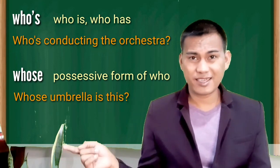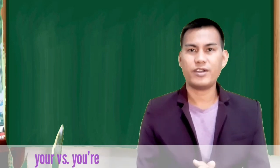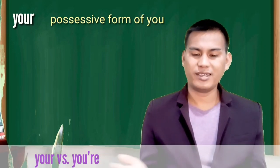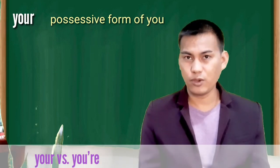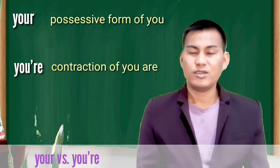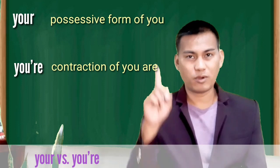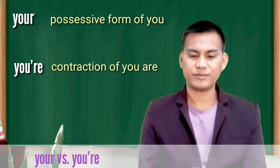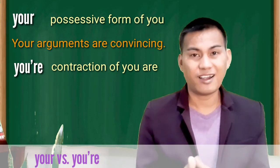Your versus you're. Your, Y-O-U-R, is the possessive form of you. You're, Y-O-U apostrophe R-E, is a contraction of you are. Your arguments are convincing. You're doing a fine job.